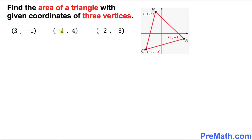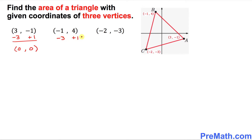We have three vertices. Our strategy is to convert one of these three vertices to zero zero. For the first vertex, we can make it zero zero: if I subtract three, three minus three becomes zero, and if I add one, negative one plus one becomes zero. So whatever we did — negative three and positive one — we're going to apply those same numbers to all the other vertices as well.